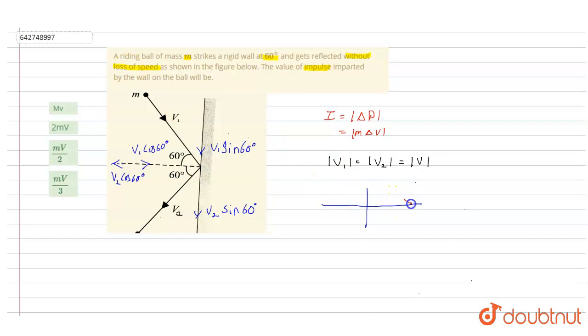That means if I draw it like this, along the positive x it is v1*cos 60 degrees, and negative x this is v2*cos 60 degrees. So if I write the change in velocity, that will be v2 final velocity minus v1 initial velocity. That means if I follow sign convention, that will be minus of v2*cos 60 degrees minus v1*cos 60 degrees.